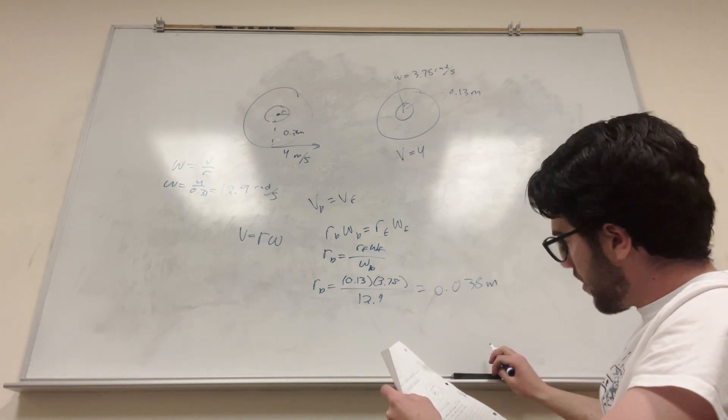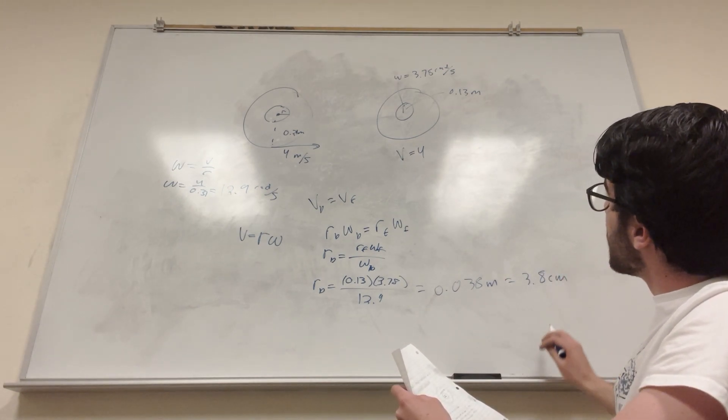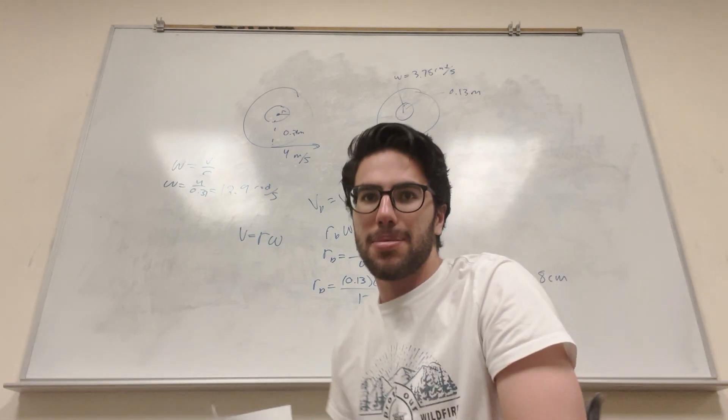Did I get that right? 1, 2, is equal to 3.8 centimeters. I think that's right. It's a little sprocket in the back.